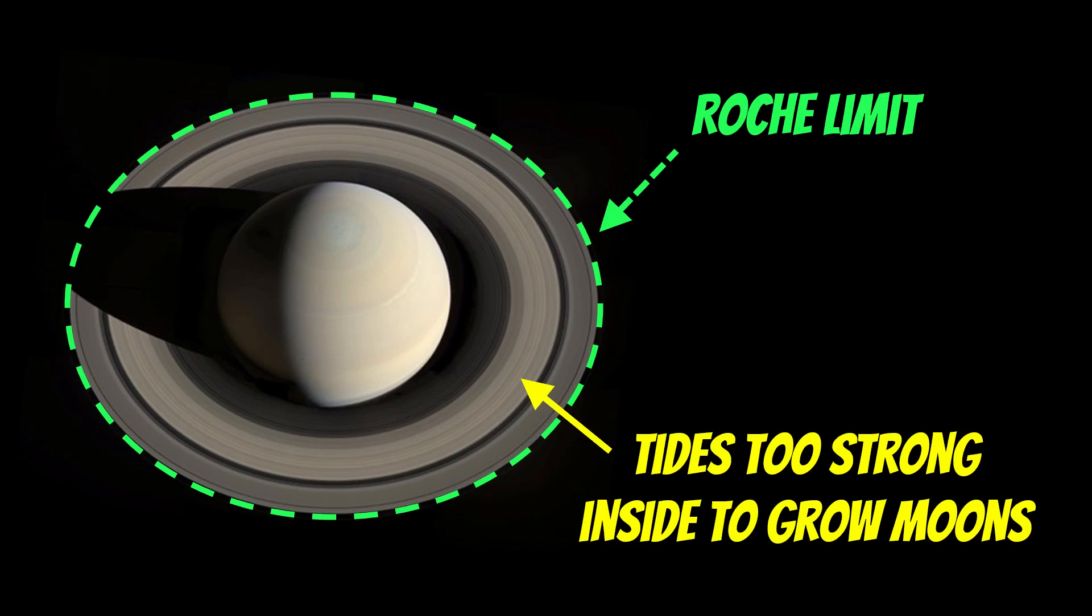The Roche limit changes depending on what the material is. So for a rocky material, it would be slightly different. It would be much closer to the planet. For water ice, that's pretty much where it is.